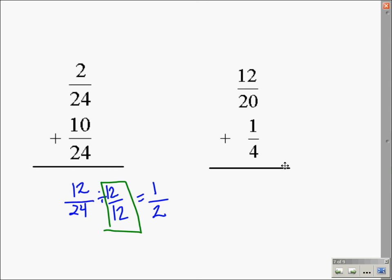Now let's take a look at another problem. This time, we don't have a common denominator. We have the number 20 in the denominator here and the number 4 in the denominator here. In this particular instance, our least common denominator, the LCD, is going to be 20.